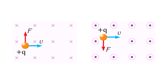The direction of the magnetic force for positive charges can be found using the second right-hand rule. The thumb shows the direction of velocity, the fingers show the direction of the magnetic field, and the palm shows the direction of the magnetic force. This is identical to the rule for a current-carrying wire, except we use the direction of velocity of the charged particle instead of the direction of current.